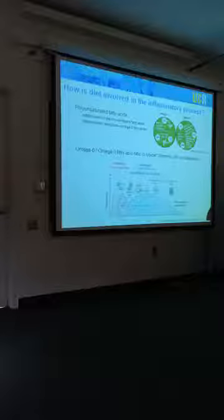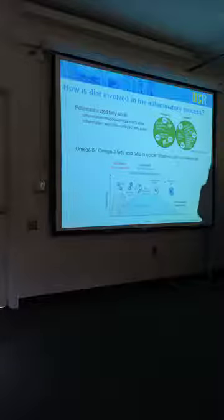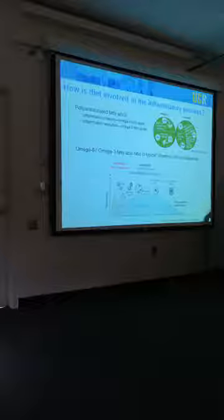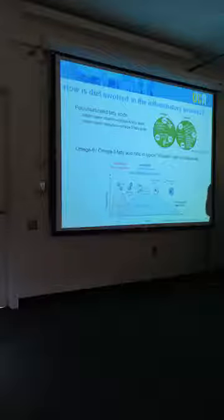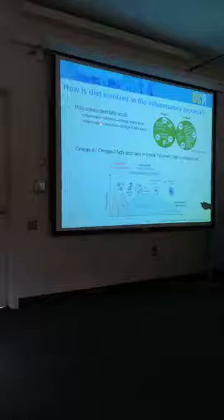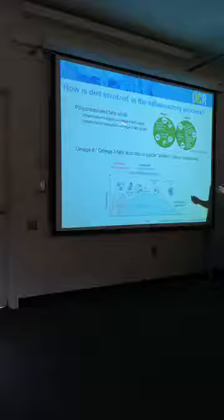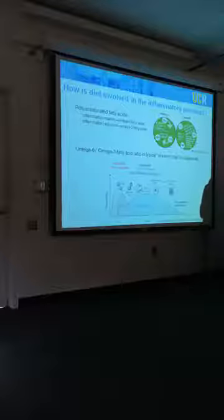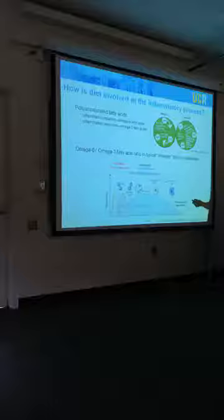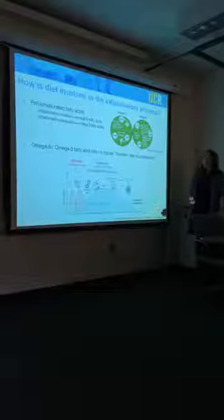How exactly is diet involved in the inflammatory process? Polyunsaturated fatty acids are essential fatty acids—we must get them from our diet and they're essential to many key biological processes. I'm focusing on their role in the regulation of inflammation. In general, inflammation initiation is mediated in part by lipid mediators derived from omega-6 fatty acids. If you're familiar with prostaglandins, leukotrienes, and thromboxanes—these are derived from omega-6 fatty acids and are key in the initiation phase of the inflammatory process.